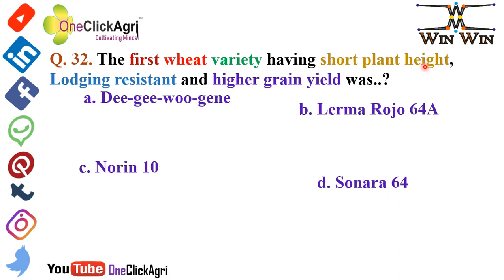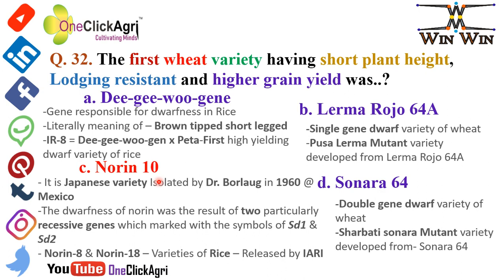Question number 32: The first wheat variety having short plant height, lodging resistance, and higher grain yield was Norin 10. It is a Japanese variety isolated by Dr. N.E. Borlaug in 1960 at Mexico. The Norin 10 gene is responsible for dwarfness in wheat, due to two recessive genes marked with the symbols SD1 and SD2 — please remember these.